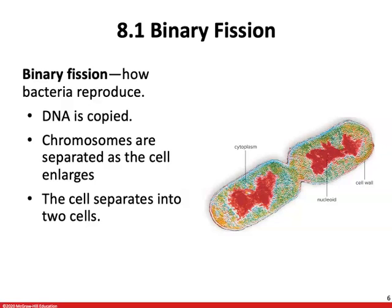Strep throat, tuberculosis, gangrene, gonorrhea, and syphilis are all well-known bacterial diseases. Not only does bacterial growth cause disease, but some bacteria release toxins that inhibit cellular metabolism. For example, Clostridium tetani produces a toxin that prevents muscle relaxation. Over time, all muscles contract — including the diaphragm — which could ultimately lead to suffocation.